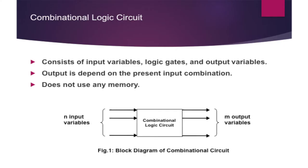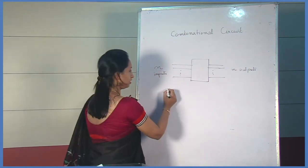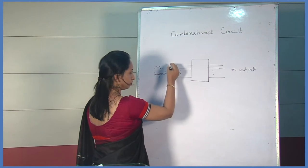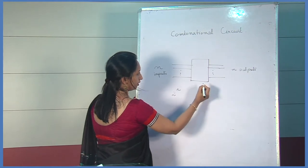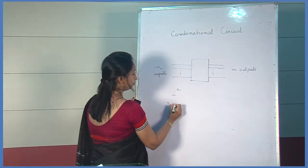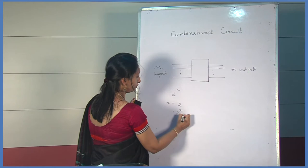A combinational logic circuit includes inputs, then logic gates, and outputs. The output depends on the present input values and it does not have any memory. If there are n numbers of inputs, then the output will be 2 to the power n. So, if n equals 2, then the total possible input combinations will be 2 to the power 2, equal to 4.